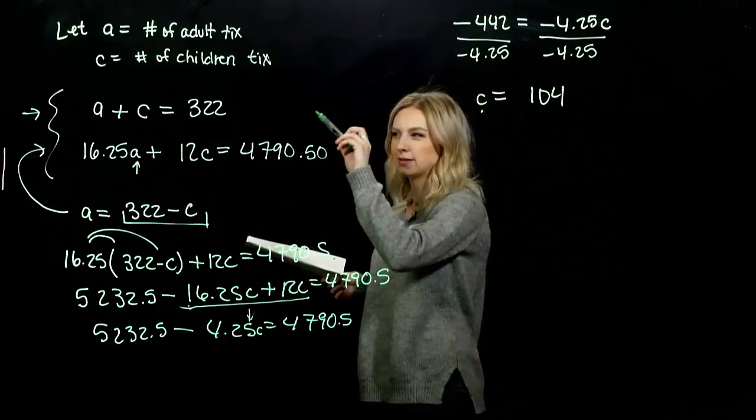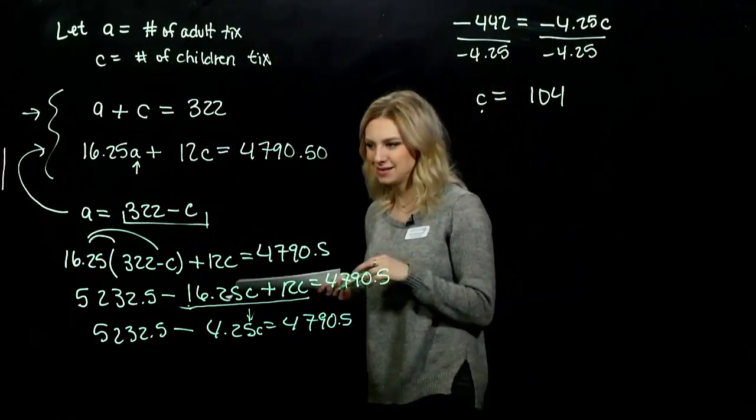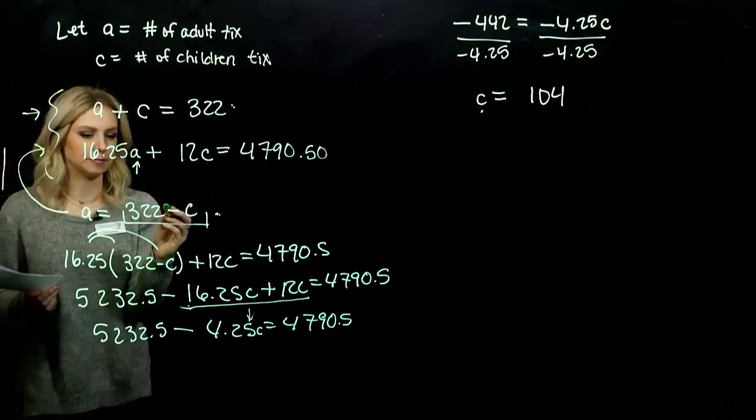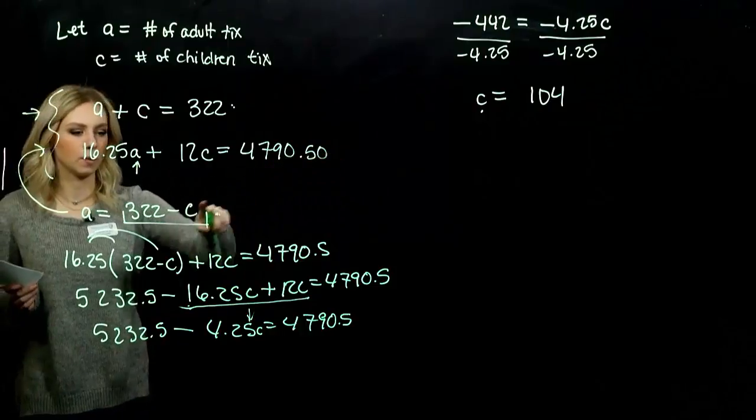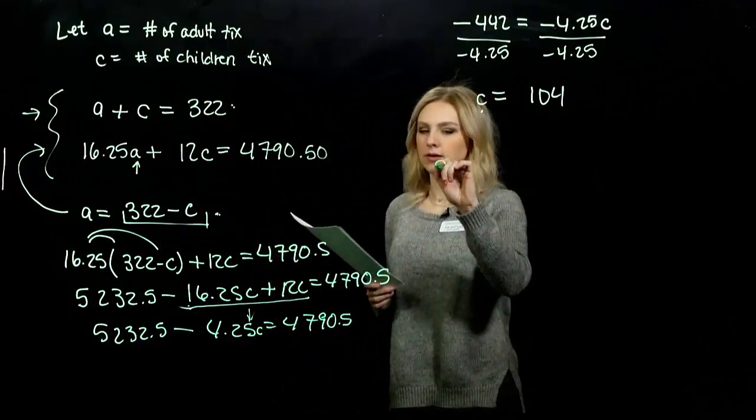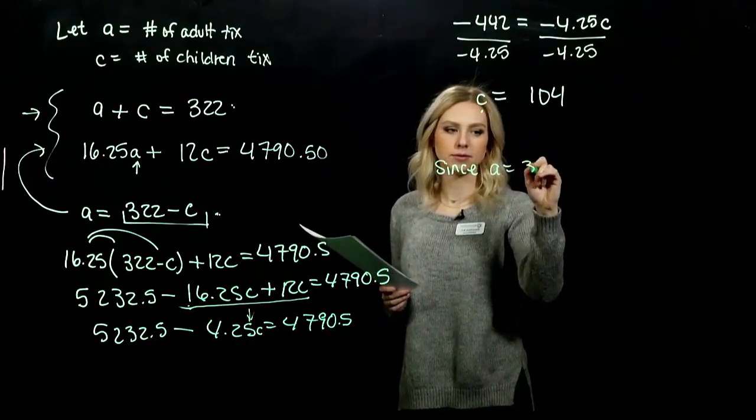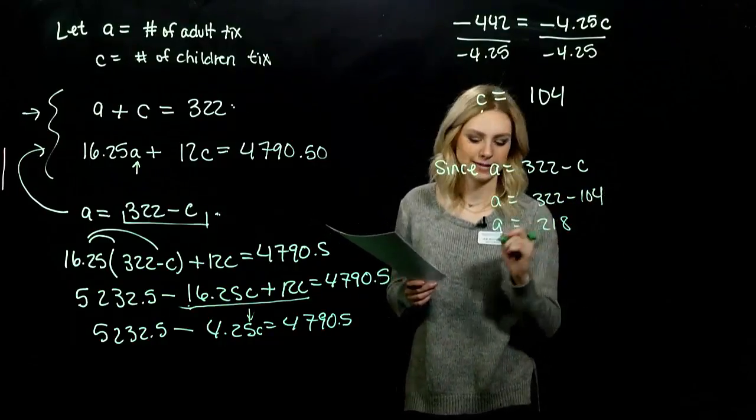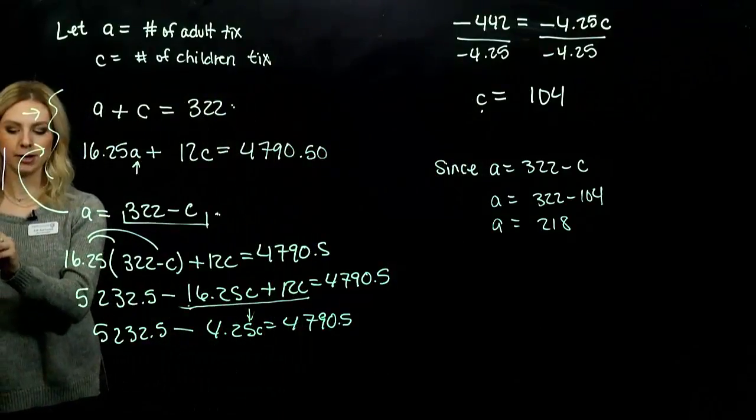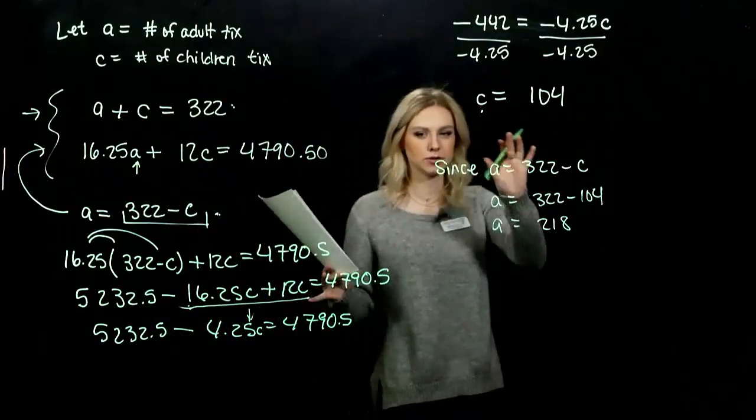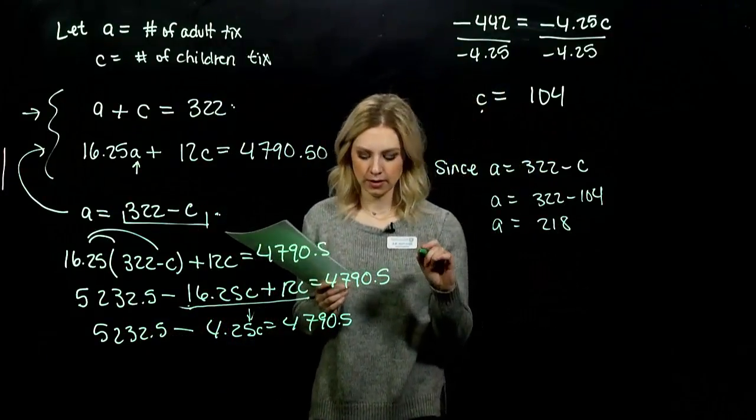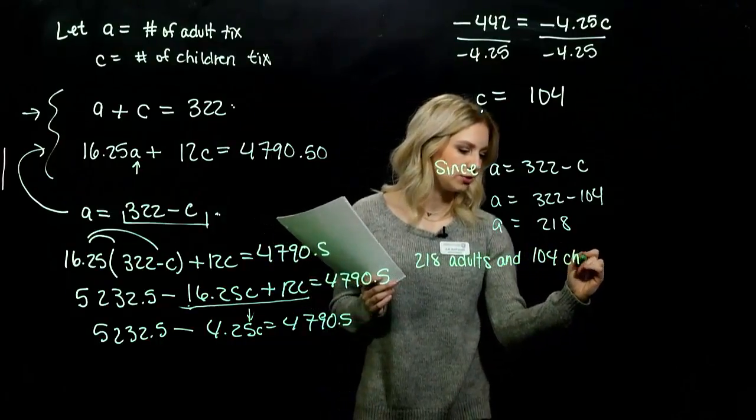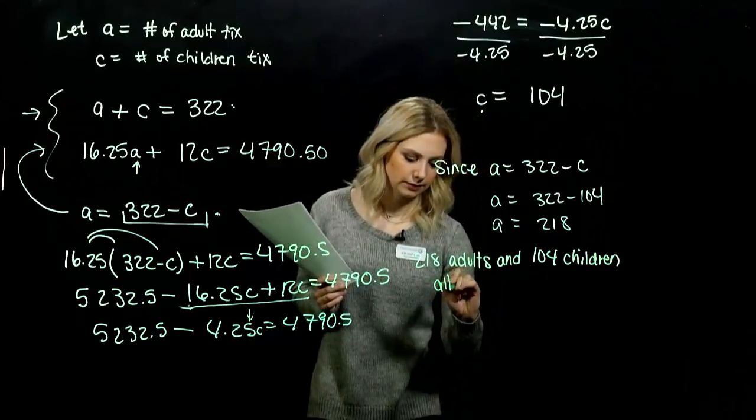So what does that mean for my adults? Which one is going to be the easiest to plug it back into? This version, or the first one, doesn't really matter. But in this case, the adult is already isolated. So out of the 322 in total, if 104 of them were kids, how many were adults? Since A = 322 - C, number of adults was 322 - 104, which is 218. So we want to write the units on there, and we want to sum it up. So 218 adults and 104 children attended the movie.